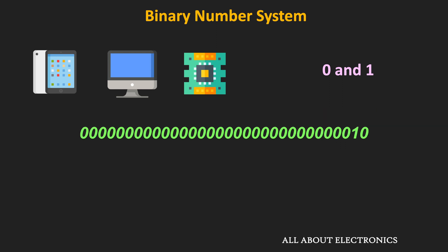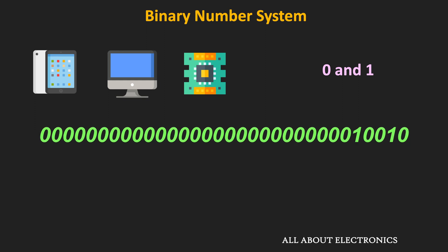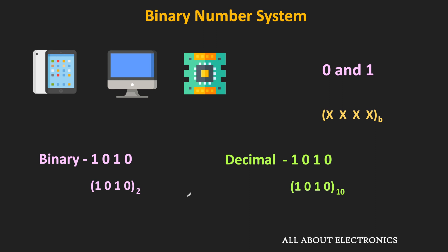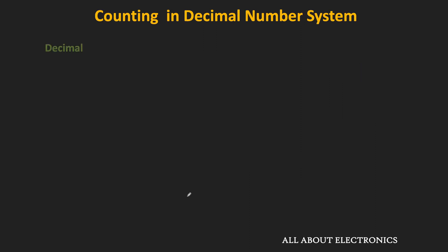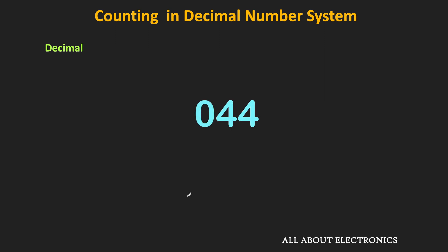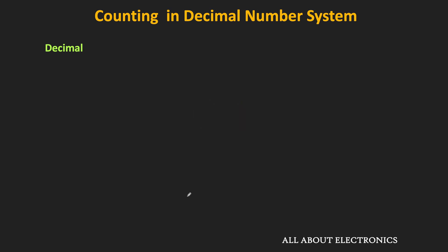So now let's see how to count in the binary number system. Counting in the binary number system is similar to counting in the decimal number system. So first of all, let us see how counting in the decimal number system is carried out, and the same rules are also applicable for counting in binary. While counting in the decimal number system, we start with the smallest number, and in the rightmost column, we start incrementing that number by 1.